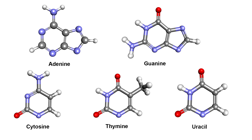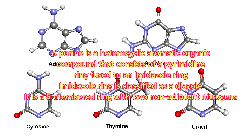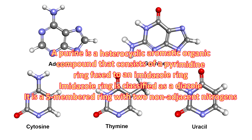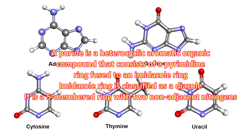There are three pyrimidine bases found in biological nucleic acids: cytosine, uracil, and thymine. A purine ring is more complicated — it is a heterocyclic aromatic organic compound that consists of a pyrimidine ring fused to an imidazole ring. The imidazole ring is another aromatic heterocyclic classified as a diazole, having non-adjacent nitrogen atoms and three carbon atoms. Unlike the six-membered pyrimidine ring, an imidazole ring is five-membered. The only similarity is that they are both planar.